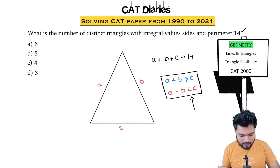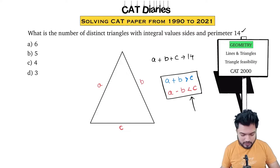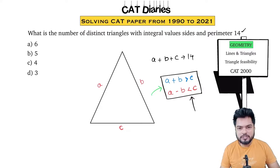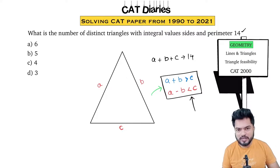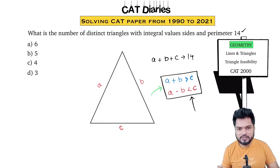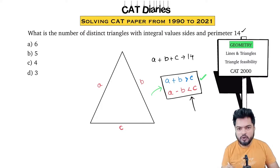I can now solve this by putting in certain values, but before that let us visualize this property. Most of us know this property — if you open any book you will find it there. But the problem is we don't visualize. Where did this property come from? Why is it that the sum of the two sides has to be greater than the third side? What will happen if the sum of the two sides is equal to the third side? Let's first visualize this before giving the answer.